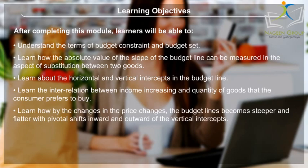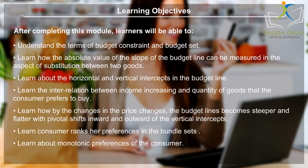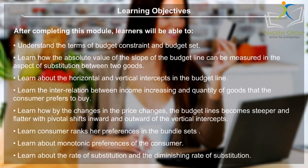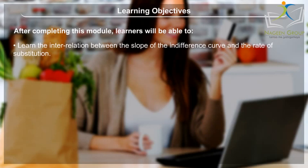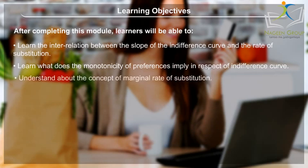Learn how by changes in the price, the budget lines become steeper and flatter with pivotal shifts inward and outward of the vertical intercepts. Learn how a consumer ranks her preferences in the bundle sets. Learn about monotonic preferences of the consumer. Learn about the rate of substitution and the diminishing rate of substitution, and the interrelation between the slope of the indifference curve and the rate of substitution. Learn what the monotonicity of preferences implies in respect of the indifference curve. Understand the concept of marginal rate of substitution.